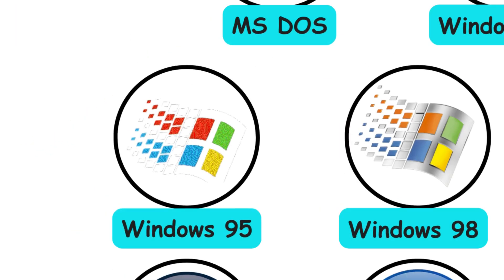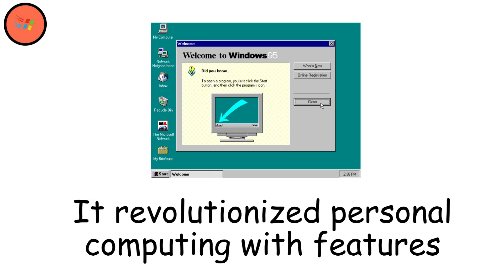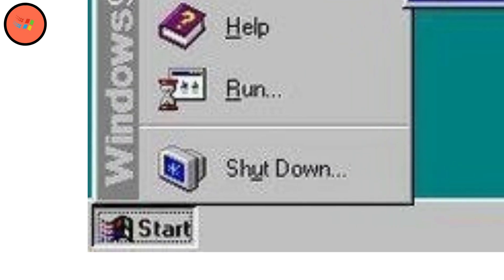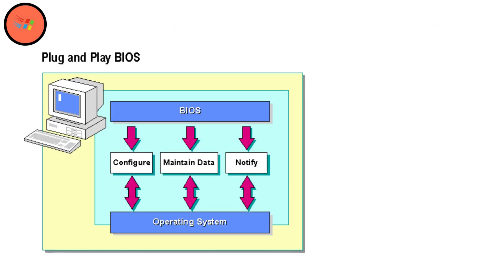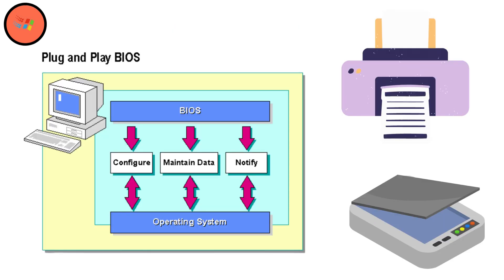Windows 95, 1995. Windows 95 was a cultural phenomenon. Landing in 1995, it revolutionized personal computing with features we take for granted now. The start menu gave users a central hub to access everything, while the taskbar showed what was running at a glance. Plug-and-play technology meant you could connect a printer or scanner and have it work instantly — no more hunting for driver disks.